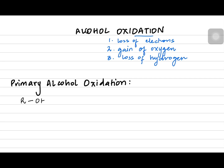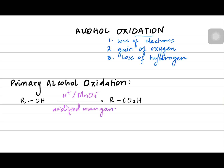A primary alcohol can be oxidized using acidified potassium manganate 7. If you use acidified potassium manganate you get carboxylic acid. It's purple in color — that's why I'm writing it with a purple pen. We call it acidified manganate; it could be sodium manganate or potassium manganate 7. The 7 is the oxidation number, and it changes from purple to colorless by the end of the reaction.